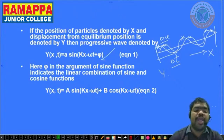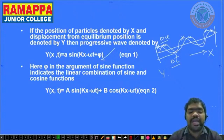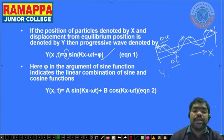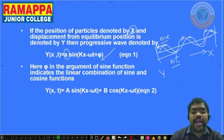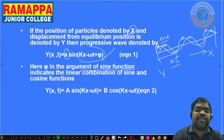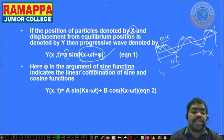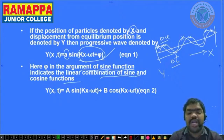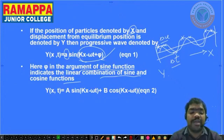The progressive wave is denoted by the equation: y(x, t) = A sin(kx − ωt + φ). Here A is the amplitude, k is the wave number constant, x is the position, t is time, and φ (phi) is the initial phase — the argument of the sine function, which indicates a linear combination of sine and cosine functions.